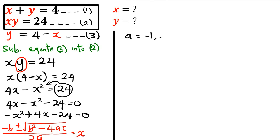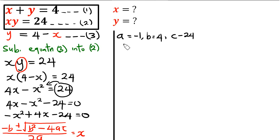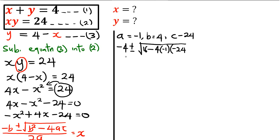The value of b — the coefficient of x — is 4, and the value of c, the constant, is minus 24. Putting these into the formula, we have: minus 4 plus or minus the square root of 4 squared, that's 16, minus 4 times minus 1 times minus 24, all over 2a.